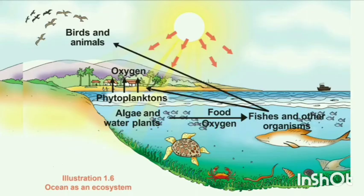Here, you can see an illustration showing the ocean as an ecosystem. You can see phytoplanktons, algae, and water plants in the ocean. These phytoplanktons, algae, and water plants perform photosynthesis and release oxygen.